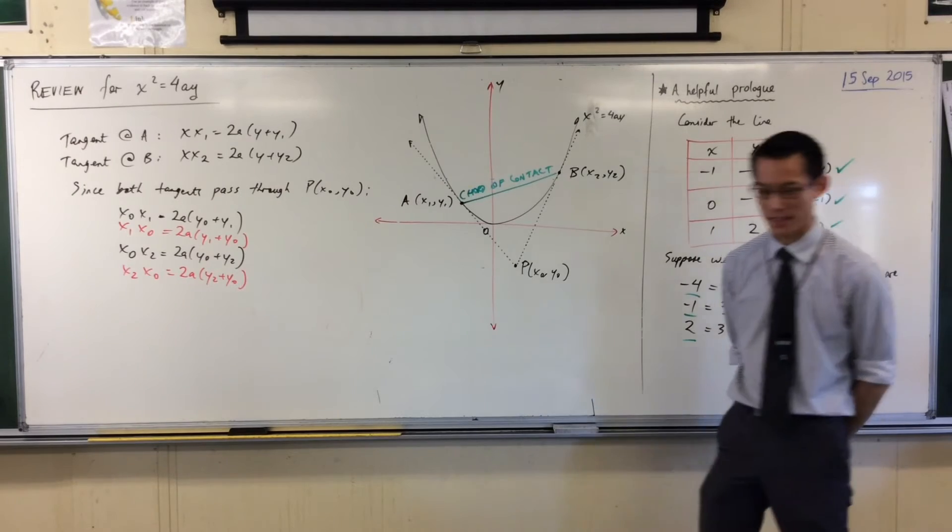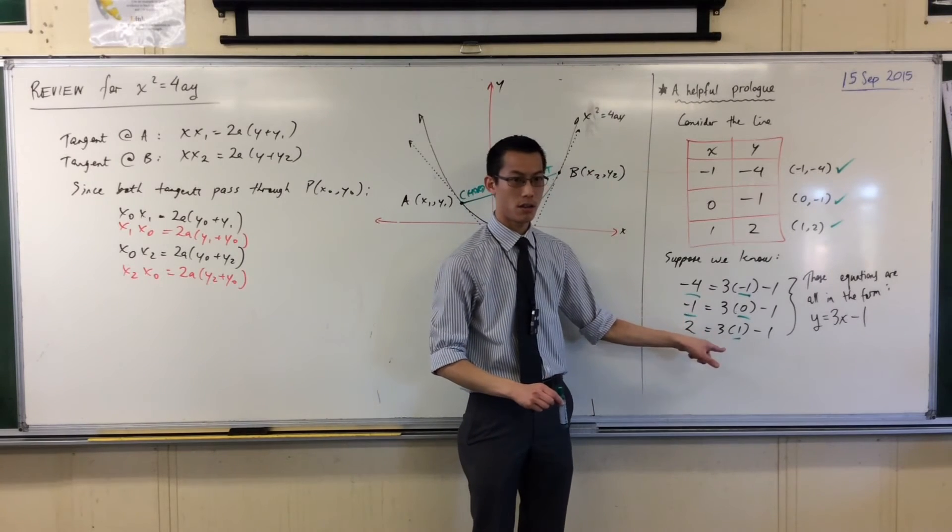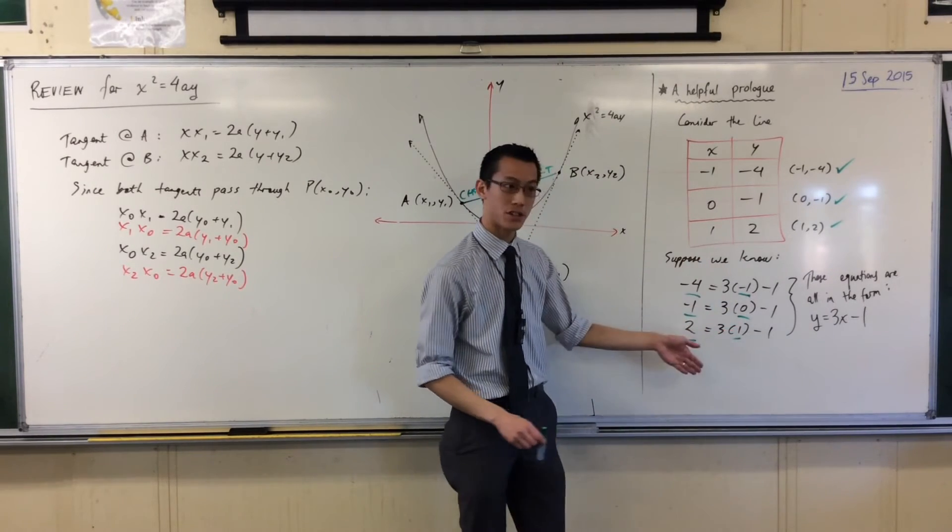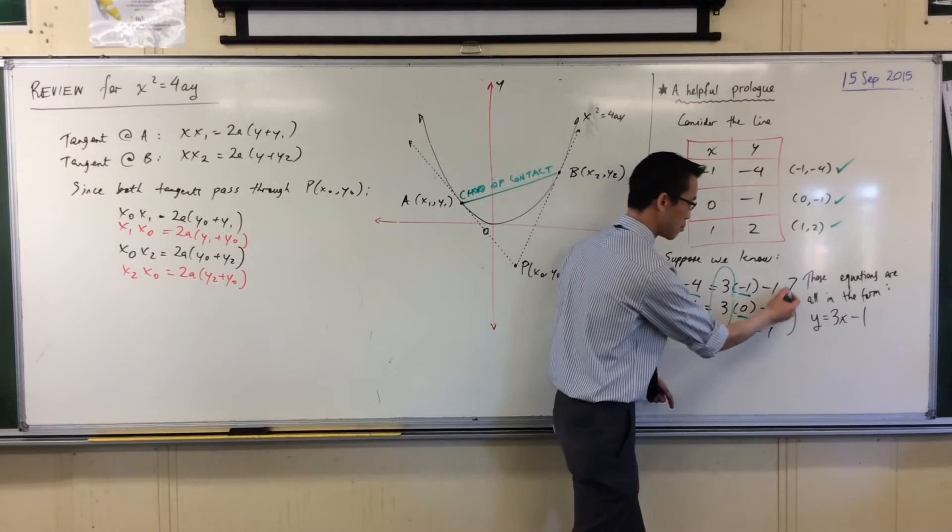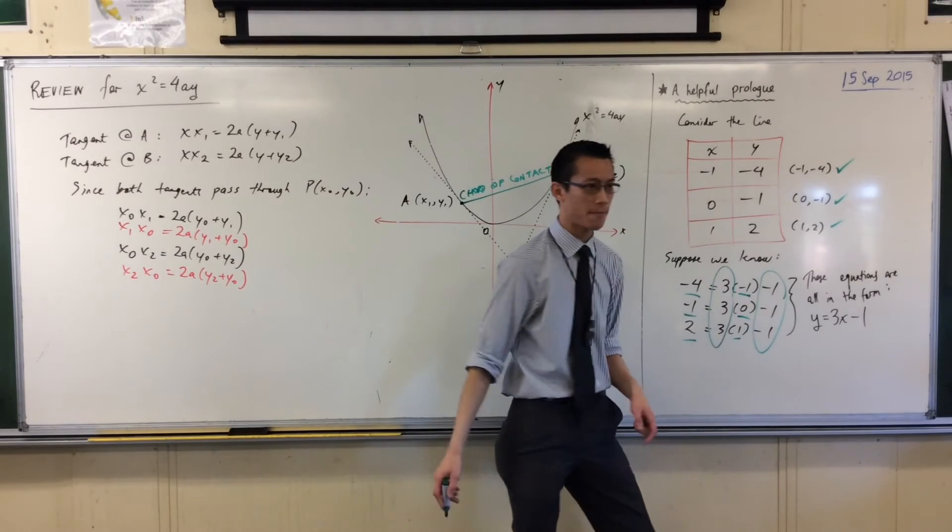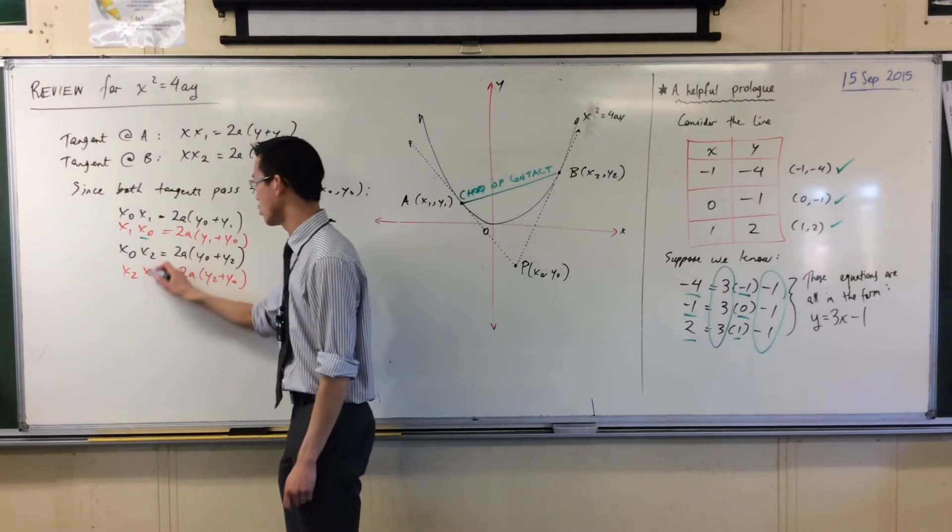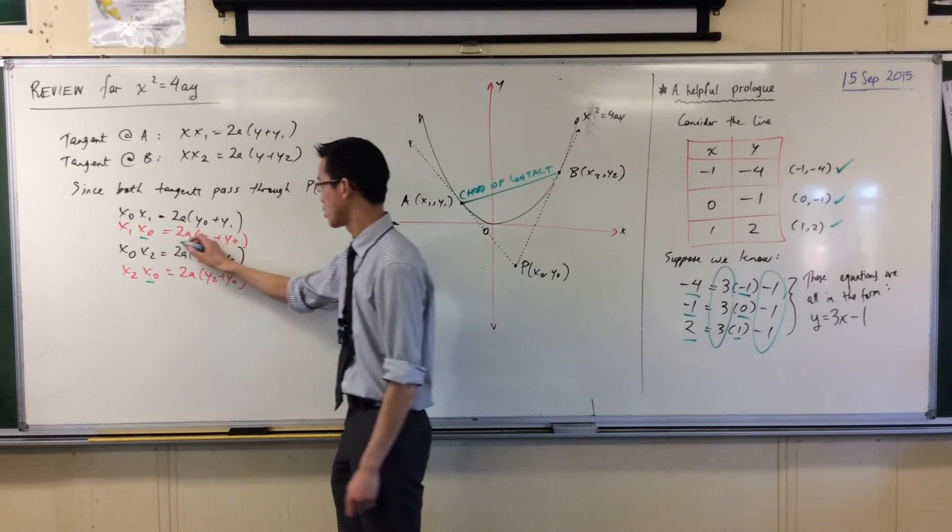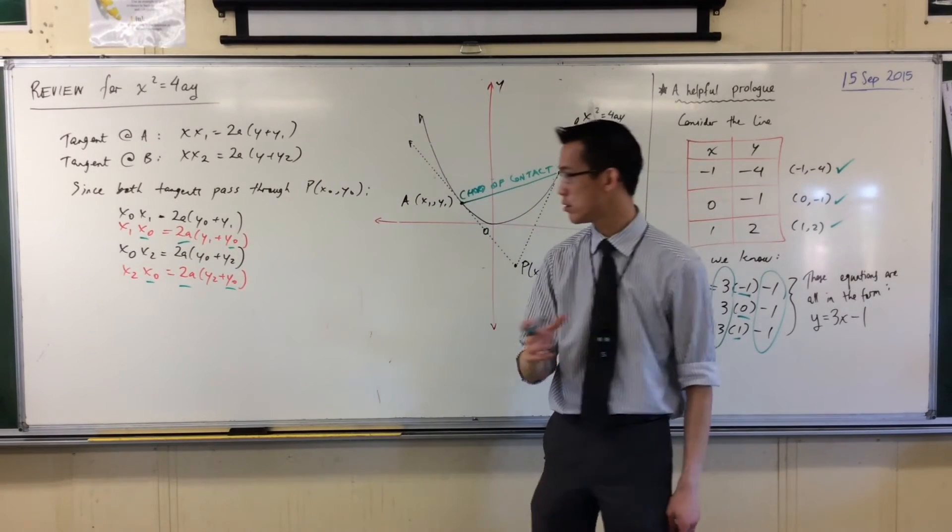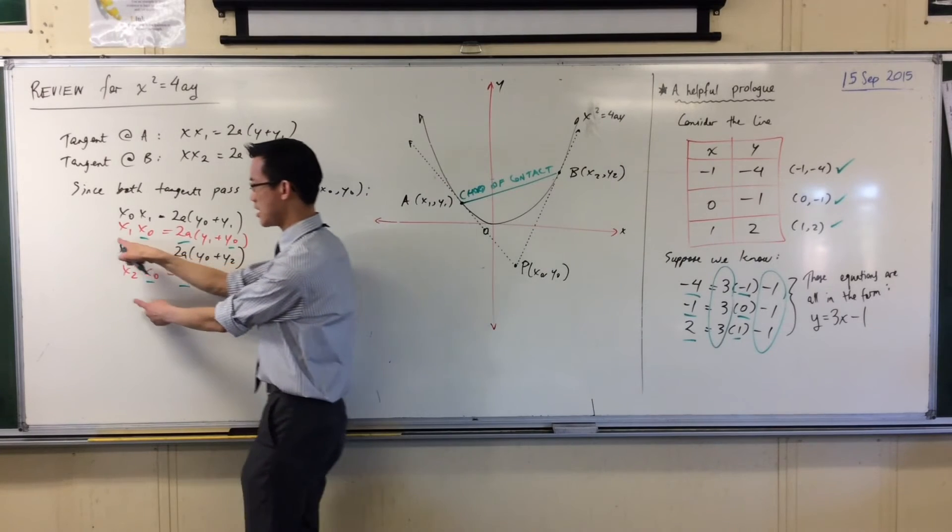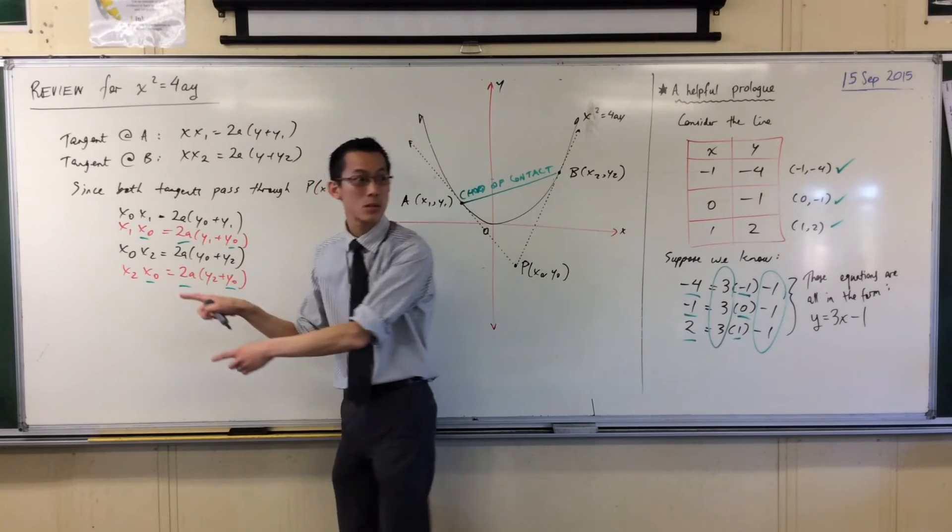And the reason why this is valuable is because this is exactly what we did right here. Do you see this? I had three equations and they all were in the same format. They all had these threes in common, and they all had these minus ones in common. Now you have a look at this pair of red equations. You've got an x₀ in the same spot, you've got a 2a in the same spot, and then you've got a y₀ in the same spot. What has changed is this pair of values out the front and this pair of values nestled in here.